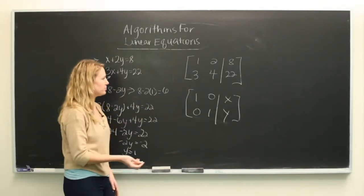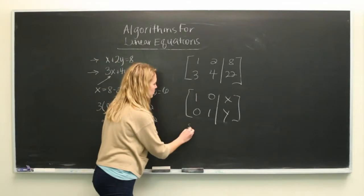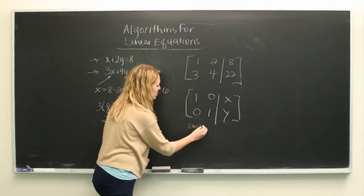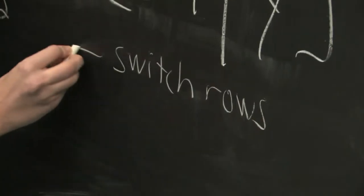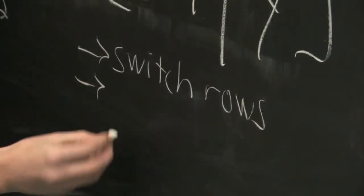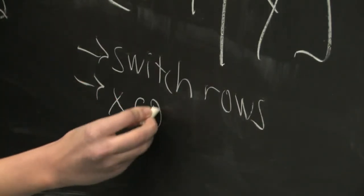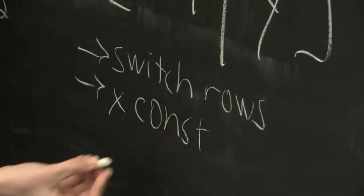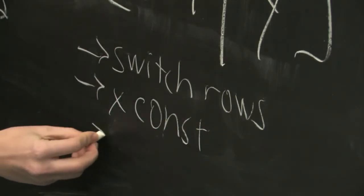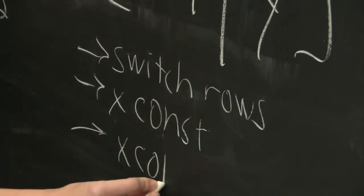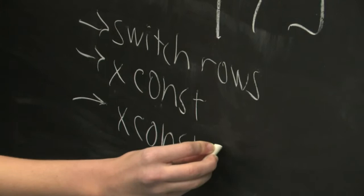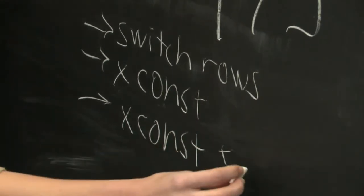So what you can do is you can switch rows around. You can multiply a row by a constant, and then add or subtract it to another row.